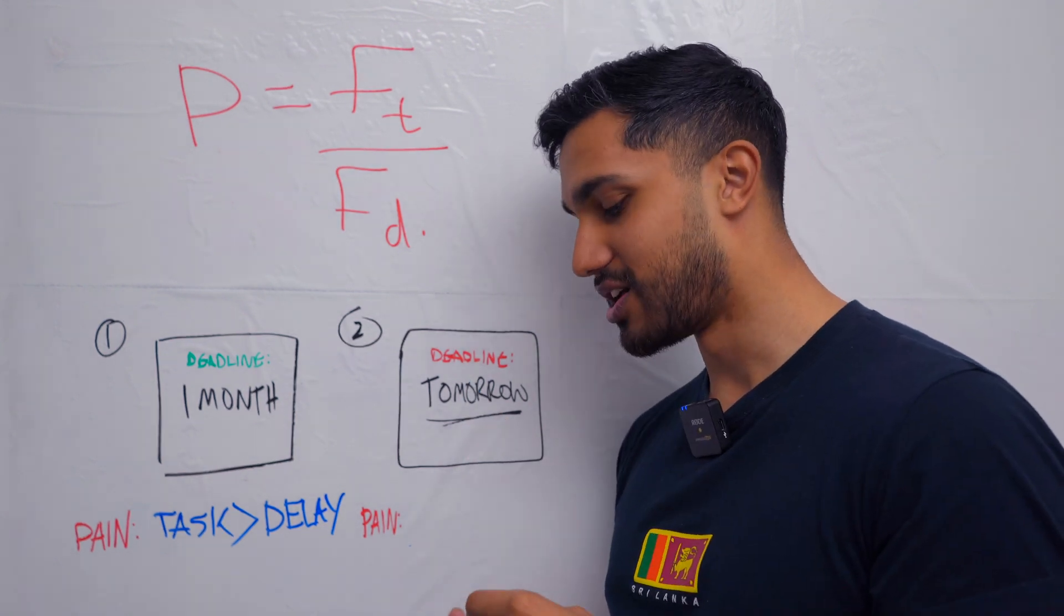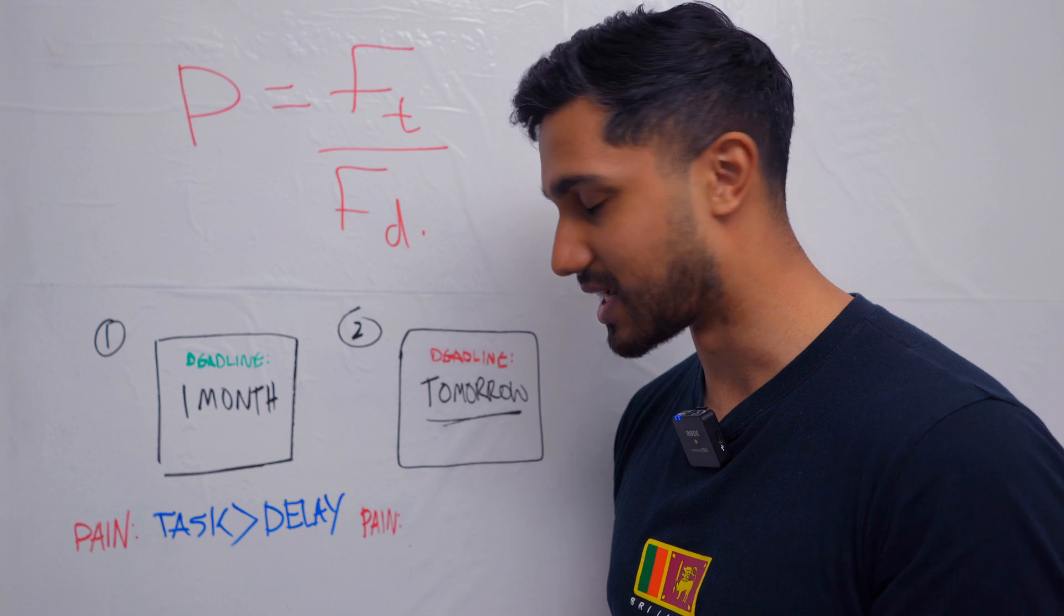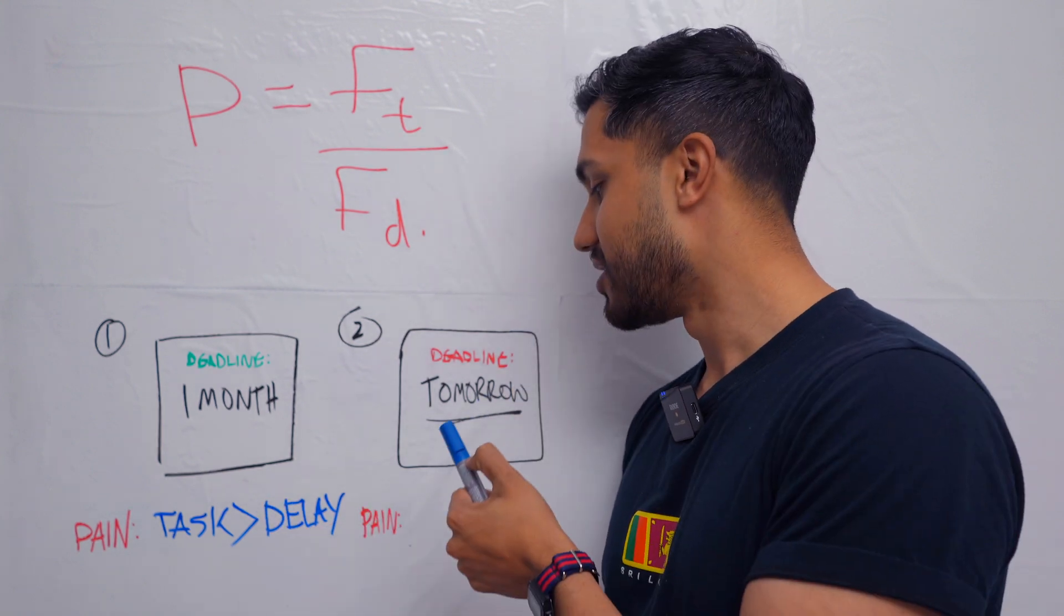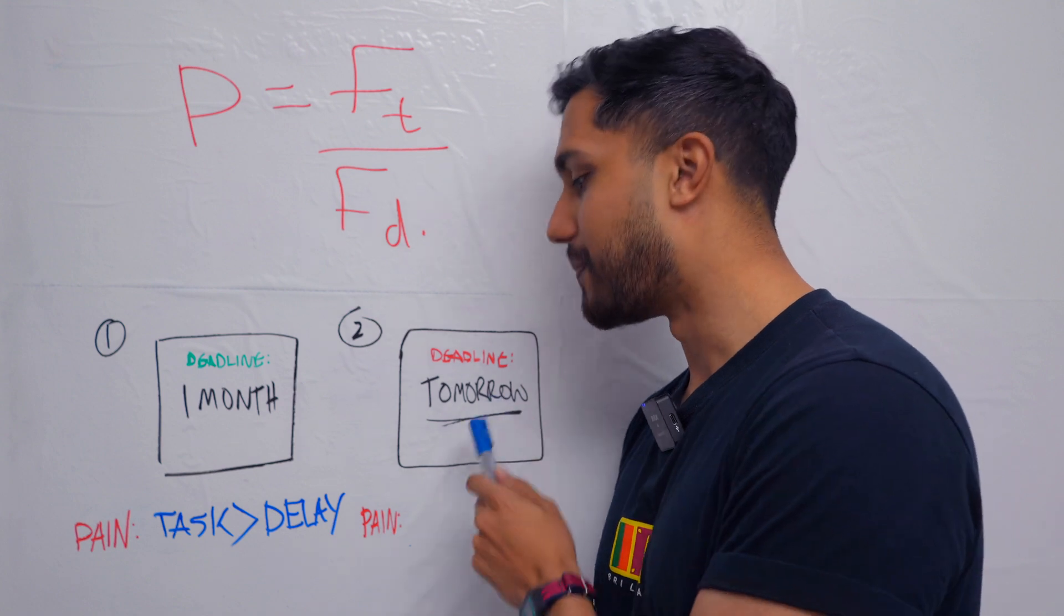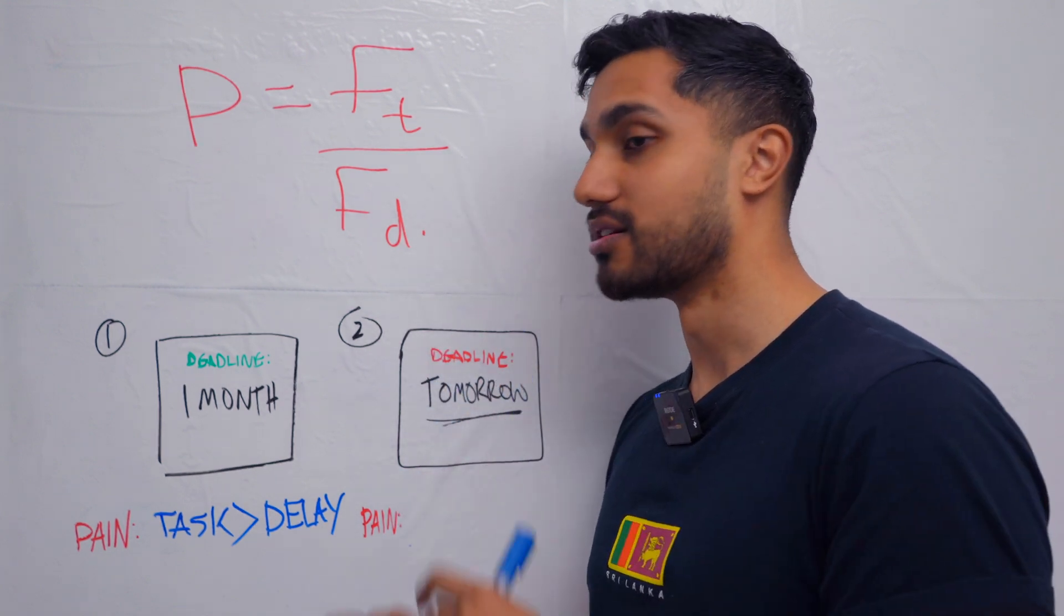Now, in the opposite scenario, you have a deadline that is now tomorrow. And the reason why you don't procrastinate is because the pain of the task - the pain is probably even larger - you really don't want to do this task, but the pain of the delay is much higher because you might fail out of your course,